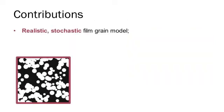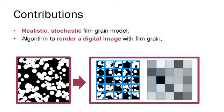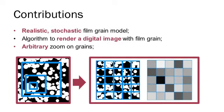In this work, we propose a realistic stochastic film grain model and an algorithm to render any digital image with film grain. The continuous nature of our model means that we can render film grain on an image with an arbitrary zoom factor. To the best of our knowledge, this is the first work to propose such a resolution-free algorithm.